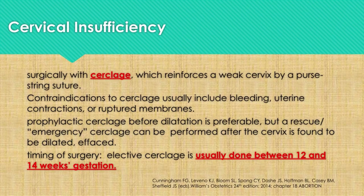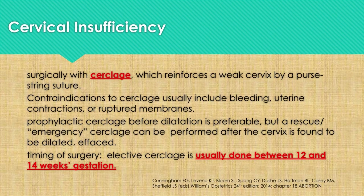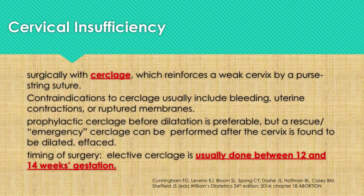Cervical insufficiency is managed surgically using a cerclage, which reinforces a weak cervix by a purse-string suture. Contraindications to cerclage include bleeding, uterine contractions, or ruptured membranes. Prophylactic cerclage before dilatation is preferable, but a rescue or emergency cerclage can be performed after the cervix is found to be dilated or effaced. Elective cerclage is best done between 12 and 14 weeks AOG.